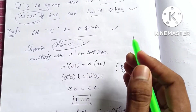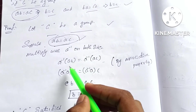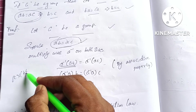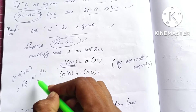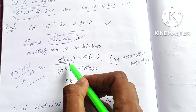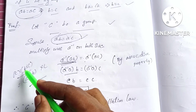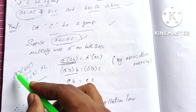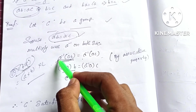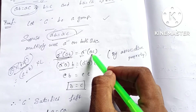If we have A inverse, multiply both sides: A inverse into AB is equal to A inverse into AC. So, using the associative property, A inverse into A into B is equal to A inverse into A into C.